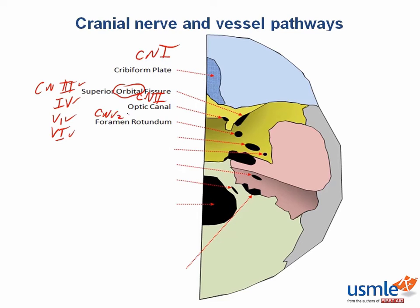Cranial nerve V2 passes through the foramen rotundum, which is round — rotund, round. And cranial nerve V3 passes through the foramen ovale, which is more oval shaped. Note that cranial nerve V1, V2, and V3 pass through the skull in numerical order, from anterior to posterior. One mnemonic is that divisions of cranial nerve V exit owing to standing room only — superior orbital fissure, then rotundum, then ovale.